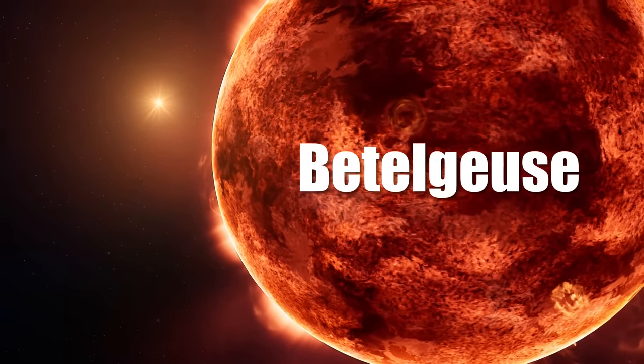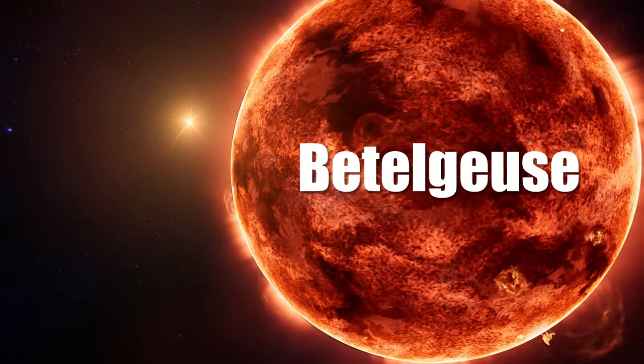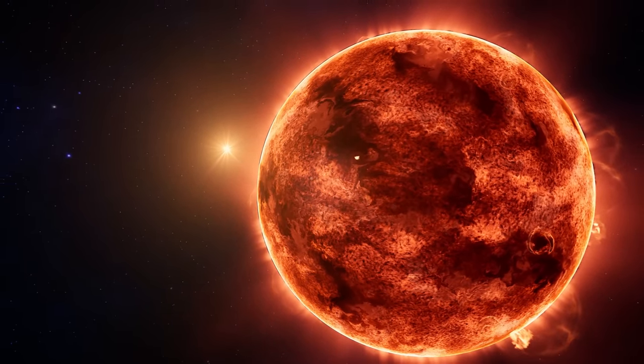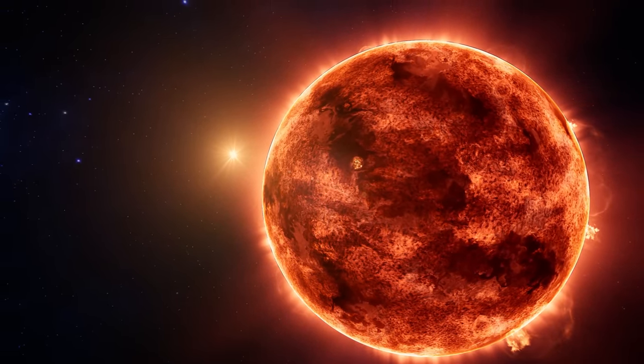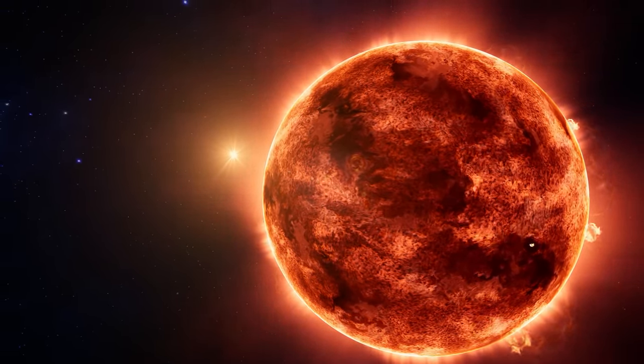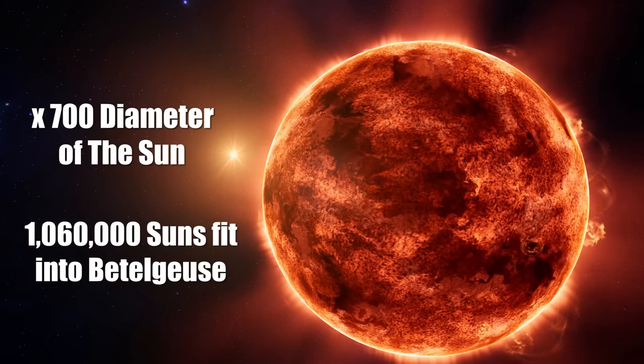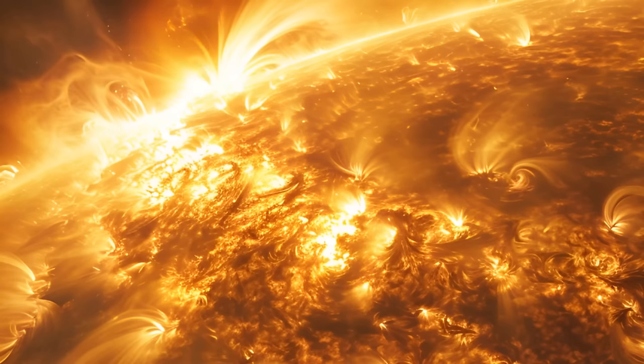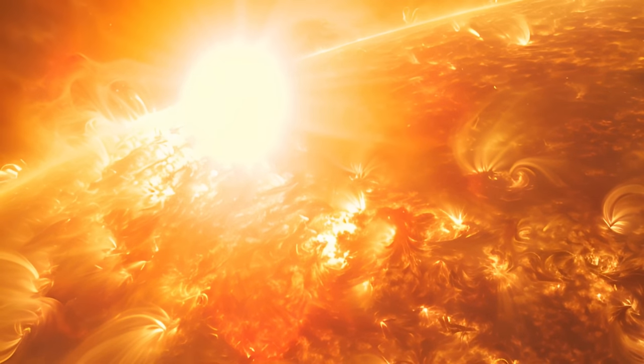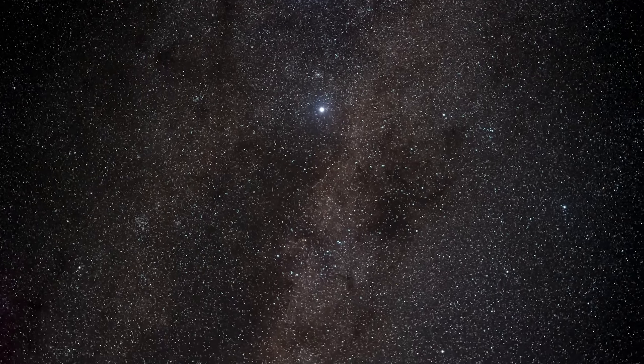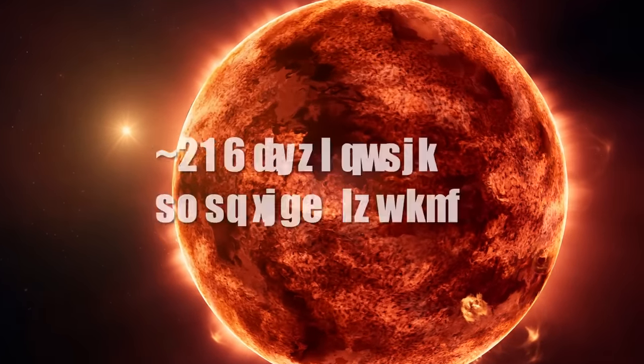To comprehend such astronomical distances, we consider stars like Betelgeuse, one of the largest known, with a diameter surpassing the orbits of Mars or even Jupiter around the Sun. Nearly 700 times the size of our Sun, or about 1 billion kilometres in diameter. Betelgeuse is so bright that it can be easily found in the night sky, even though it's at about 650 light-years away.